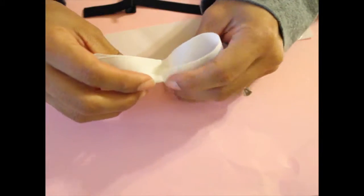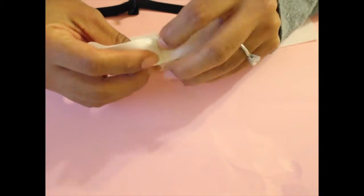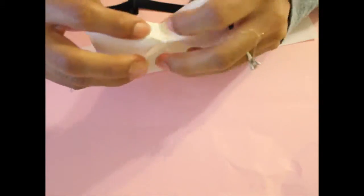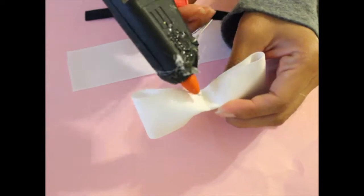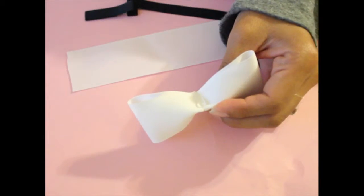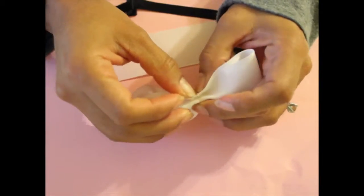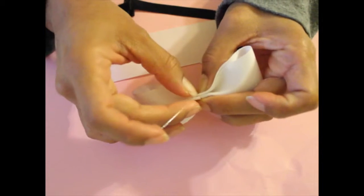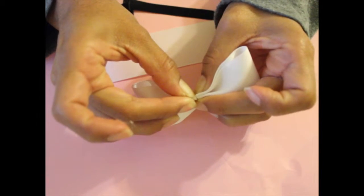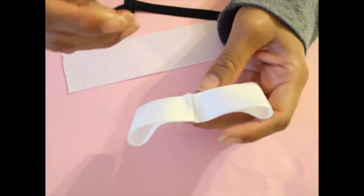All right, so once that is done and the center has been glued, you're going to put some glue in the back area where the seam is and you're going to fold the end of the ribbon back towards the center just like that.